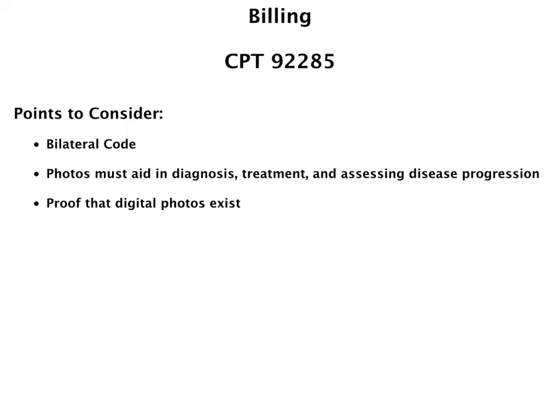You can bill for smart device ophthalmic photography. The code here, CPT 92285, is for anterior chamber photography. A couple of points to consider when billing this code: it is a bilateral code, so you get paid the same whether you take a picture of one eye or both eyes. The photos must aid in diagnosis, treatment, and assessing disease progression — and for the most part, that's the most common reason we're taking photographs. The last point to consider is that there must be proof that digital photos exist, either linked in the patient's chart in the EHR system, or if paper charts are still being used, a notation in the patient's chart of where those photos are stored and what the findings were.